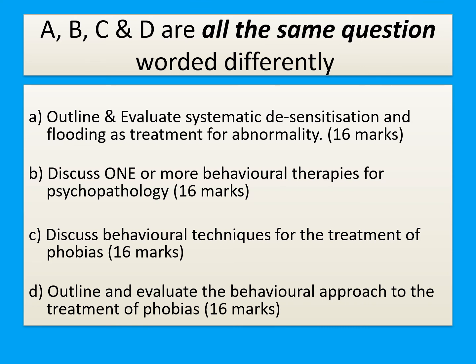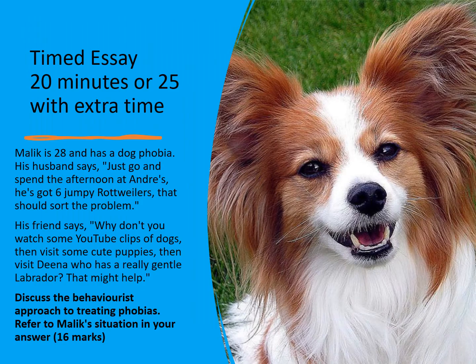For exam practice, have a go at an extended essay question on this topic. Questions a, b, c, and d shown here are all worded differently but ask the same thing, because the specification says you should know the behaviourist explanation and treatment of phobias. You need to be ready for different wording in the exam. Pause the video, read through, and attempt the extended essay — or try writing it as a timed essay, aiming to complete it in around 20 minutes.